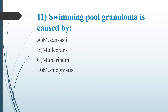Eleventh question: Swimming pool granuloma is caused by — Option A: Mycobacterium kansasii. Option B: Mycobacterium ulcerans. Option C: Mycobacterium marinum. Option D: Mycobacterium smegmatis. The answer is Option C, Mycobacterium marinum, which is a non-tuberculous (atypical) mycobacterium. Mycobacterium kansasii causes opportunistic infections. Mycobacterium ulcerans causes Buruli ulcer disease. Mycobacterium smegmatis causes skin infections, pneumonia, cellulitis, etc. Mycobacterium marinum causes swimming pool granuloma.